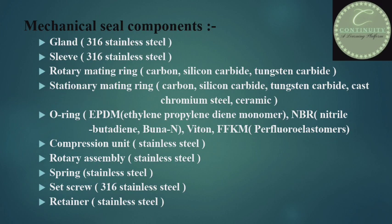Generally, stainless steel is used to make the metallic parts of the seal, such as the gland, sleeve, compression unit, rotary unit, spring, set screw, and retainer. The rotary ring and stationary ring are generally made of carbon, silicon carbide, and tungsten carbide. Other materials such as cast chromium steel and ceramic are also used for the stationary mating ring.